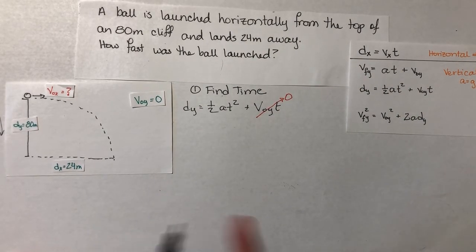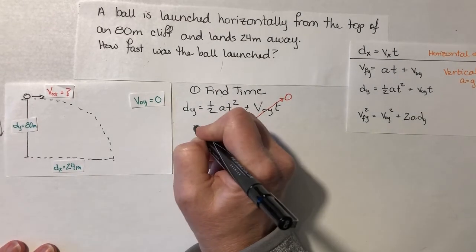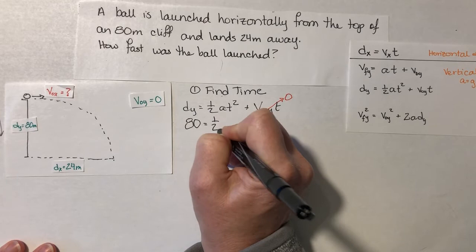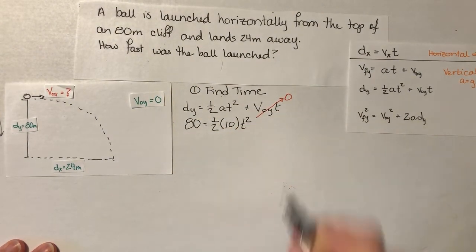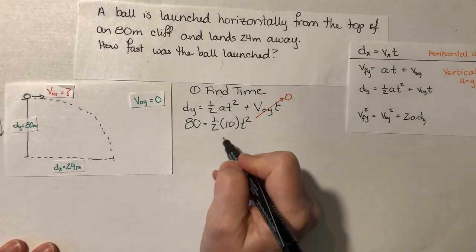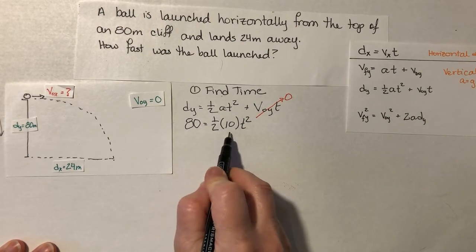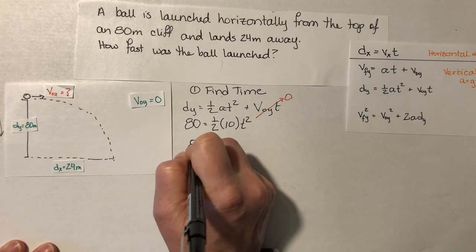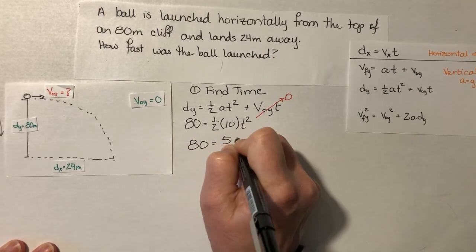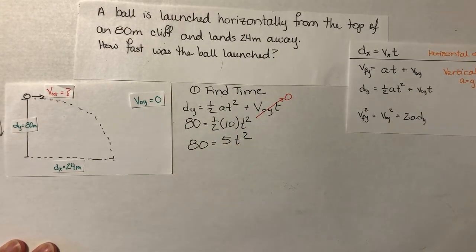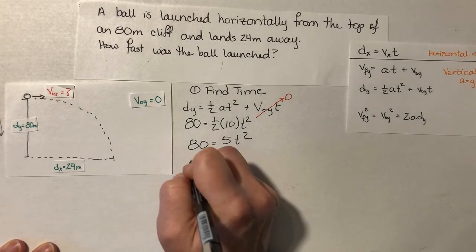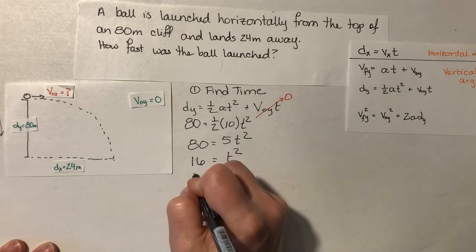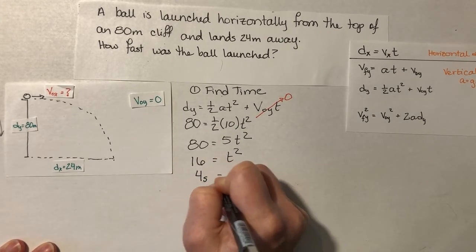So dy equals 1/2 at squared. So 80 meters equals 1/2 times 10 times t squared. So this is 5 times 80 divided by 5, 80 equals 5 t squared. I'm going to divide both sides by 5 and I get 16 equals t squared, which tells me that t is 4 seconds.